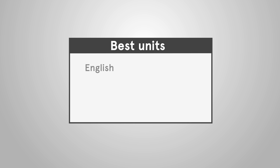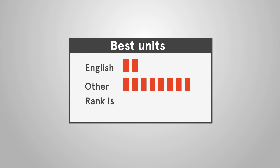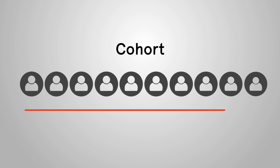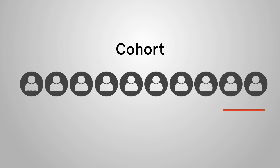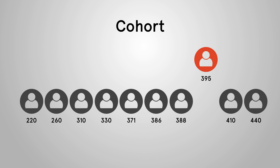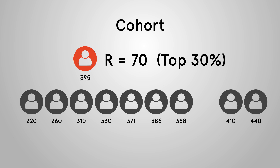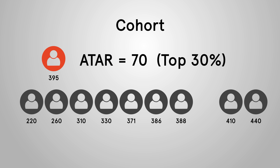After scaling, we take your two best units of English and eight best other units to give you a mark out of 500. Then we rank the whole year according to their mark out of 500. Your ATAR is your rank as a percentage of your cohort.